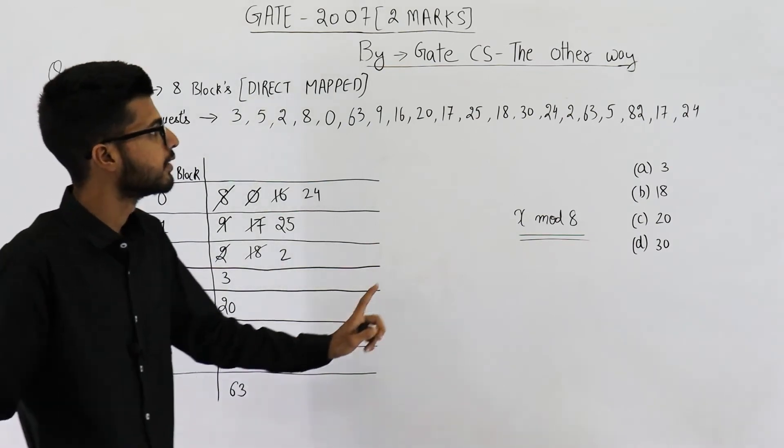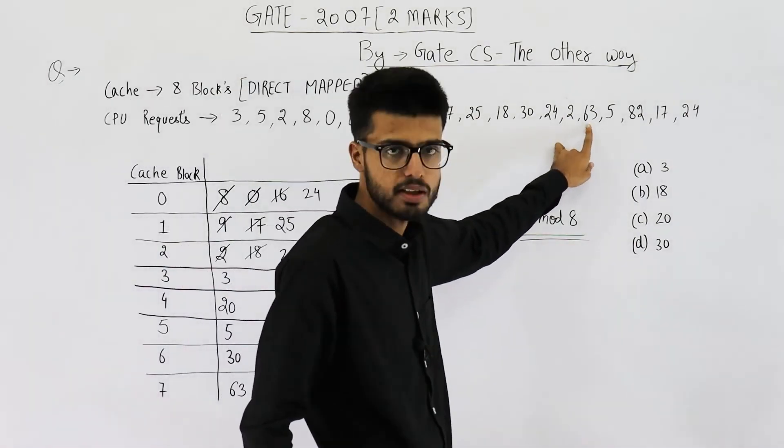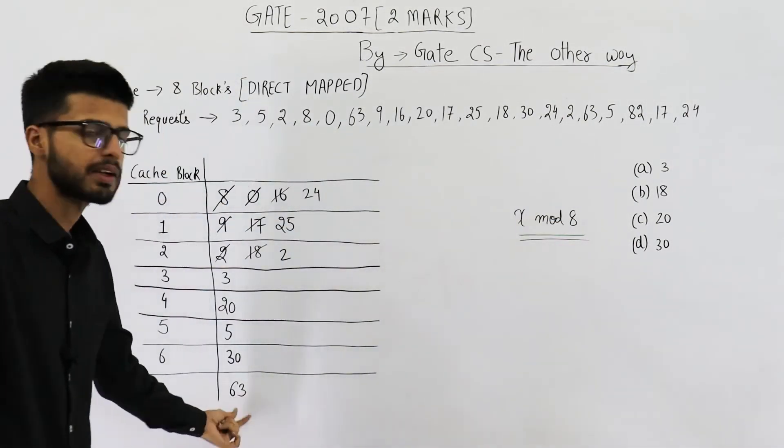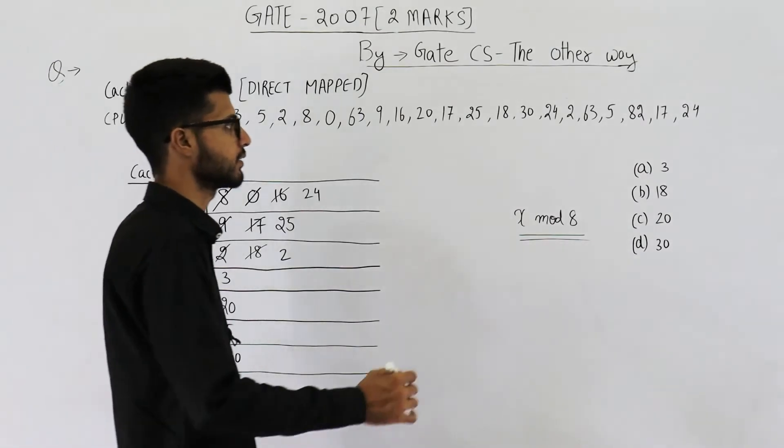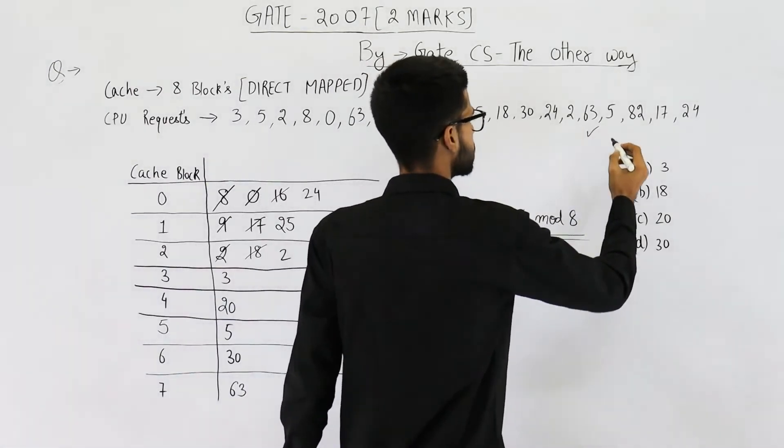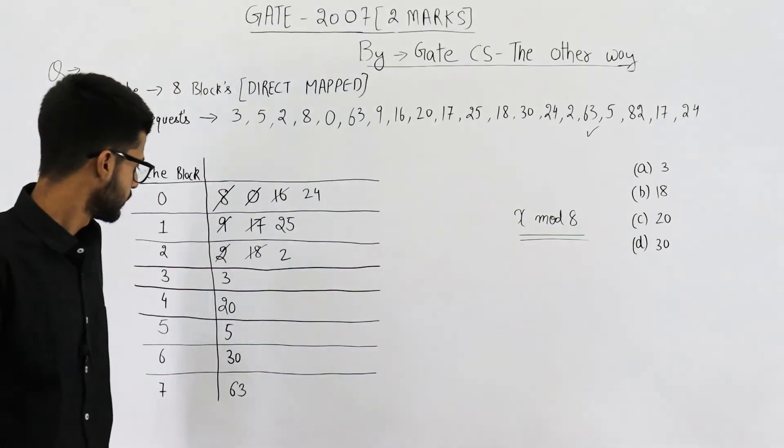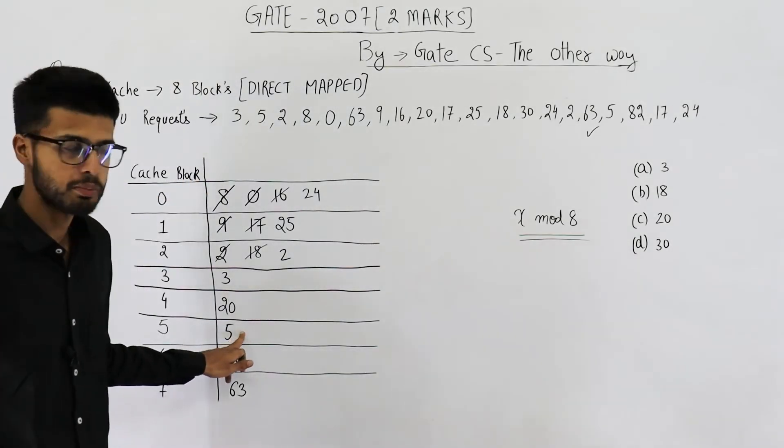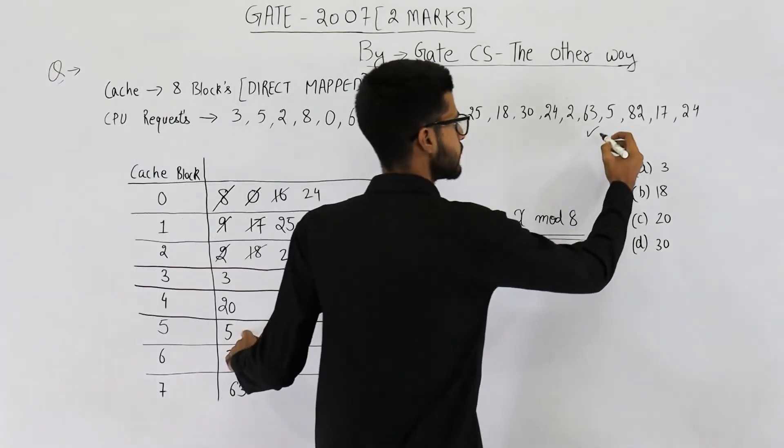Now you can see next request is for 63. 63 is already present in the cache. So this is the first hit. Next one is 5. 5 is also present in the cache. This one is the second hit.